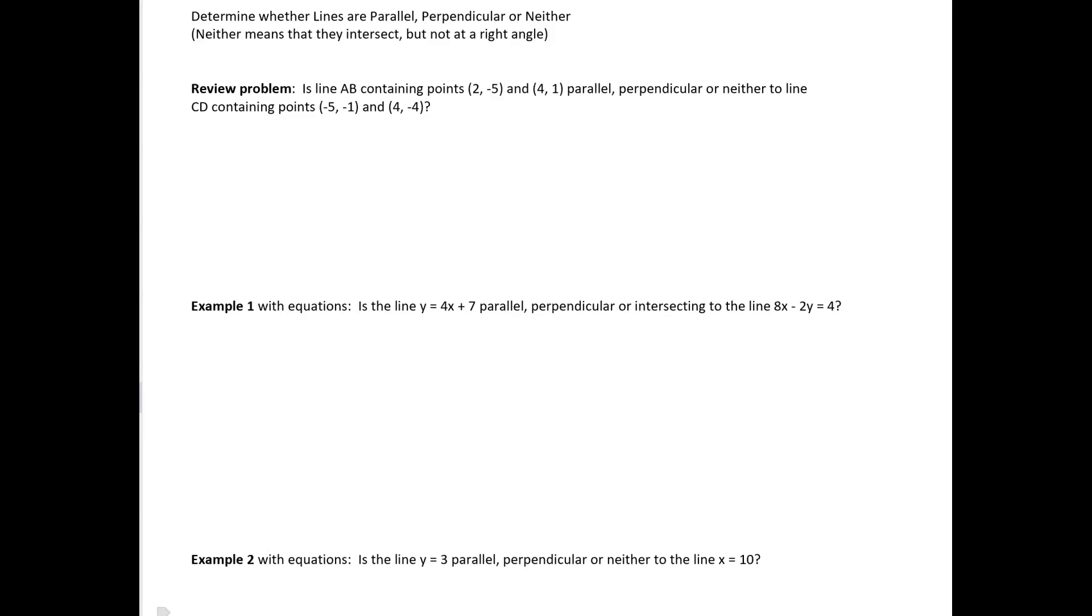We're looking at two lines and trying to decide whether they are parallel, perpendicular, or neither. By the way, when we say neither, we mean the only other option, which means that they're intersecting but not at a right angle. So neither just means they are still intersecting but not at a right angle.